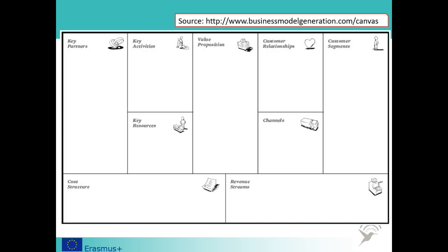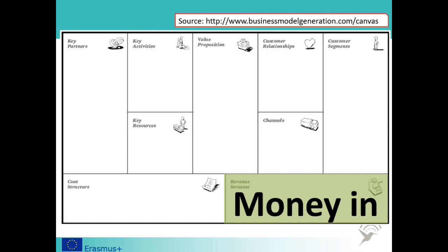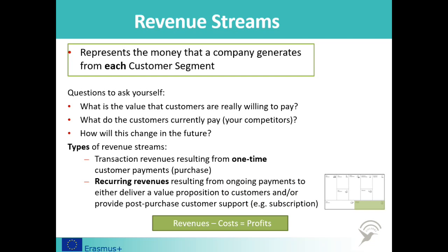We'll now consider how money will come into your startup business. In the bottom right corner, you will see the revenue streams block. This represents the money that a business generates from each customer segment. You need to ask yourself: what is the value that customers are really willing to pay, what do customers currently pay to your competitors, and how will this change in the future? The answers will help you identify the revenue streams most appropriate for your business idea. Revenues broadly fall into one of two types: one-time customer payments such as purchases, or recurring revenues resulting from ongoing payments to either deliver a value proposition to customers — as with subscriptions — or to provide post-purchase customer support.